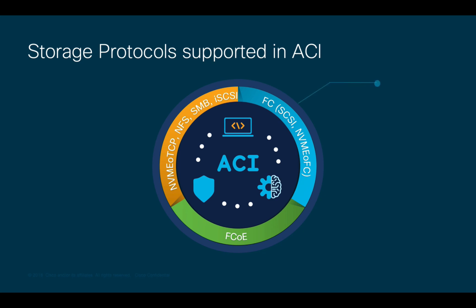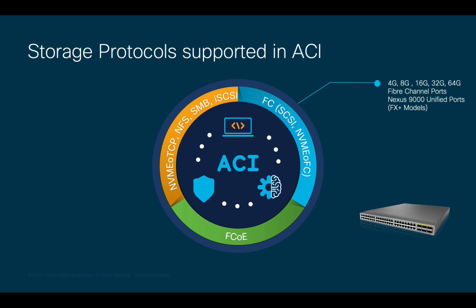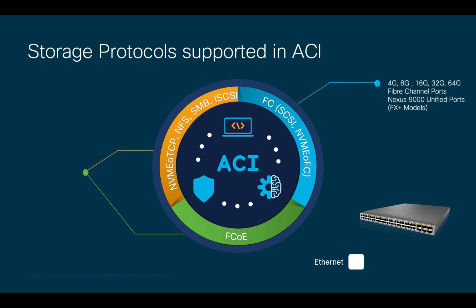ACI may run native Fiber Channel connections leveraging different speeds on Nexus 9000 FX switches, as well as other models that support unified ports. All you have to do is change the behavior of a port from Ethernet to Fiber Channel and insert the right SFP. ACI may also leverage 10, 40, 100 and 400 gig Ethernet ports to run other storage protocols like FCoE, NFS, iSCSI and SMB to name a few.